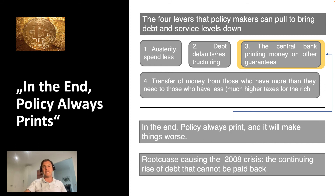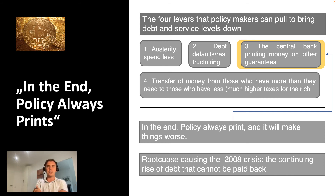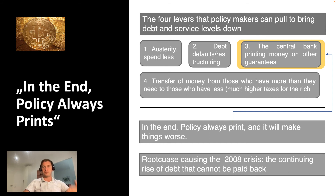Ray Dalio, in his book 'Principles for Navigating Big Debt Crises,' identifies four levers policymakers can pull to bring debt levels down: first, austerity — spend less; second, debt defaults and restructuring; third, central bank money printing and guarantees; fourth, transfer of wealth from those who have more to those who have less through higher taxes. Dalio's conclusion is that in the end, policy makers always print — and this printing makes things worse as debt grows higher each decade.